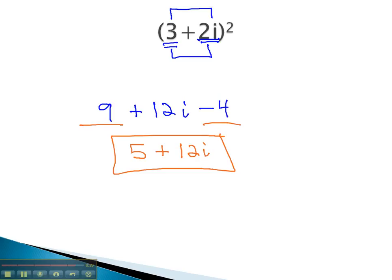Recalling that i works just like any other variable, with the only exception that i squared equals negative 1, we're able to effectively multiply complex numbers, just like any other expression before.